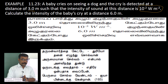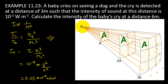The given intensity is 10 to the power of minus 2 watts per meter square. The intensity is related to the source power spread over a spherical surface area of 4π r square.